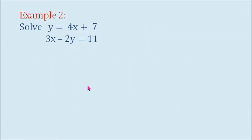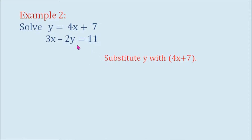Example number 2. Solve y equals 4x plus 7 and 3x minus 2y equals 11. On our first equation, y is already isolated on the left side. So we can substitute y in the second equation with 4x plus 7.